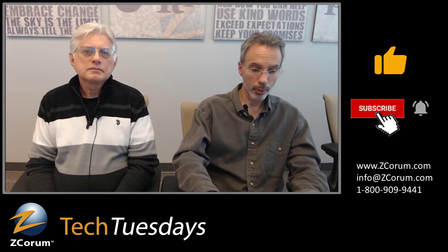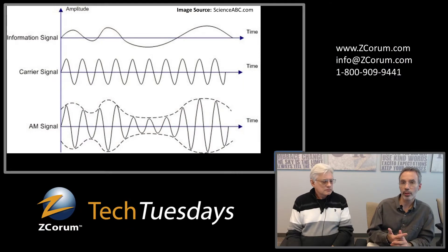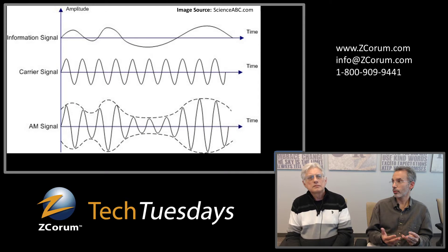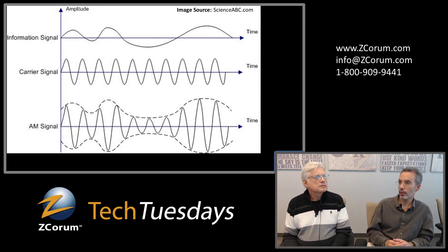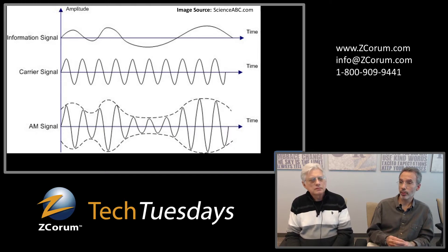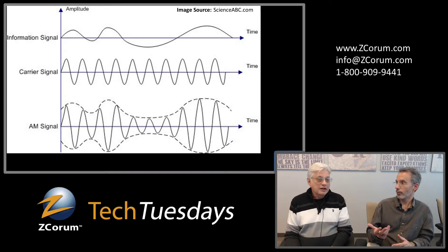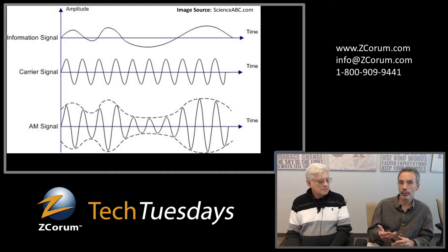So, coherent optics. One of the things that makes this different is the modulation that's used when you're sending the signal. Originally, when fiber optics first came out, they were using something called amplitude modulation. In fiber optics it was basically turning the light on and off — like a light switch going on and off. They call it on-off keying, or OOK. That's similar to amplitude modulation and similar to what you'd see in AM radio.